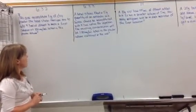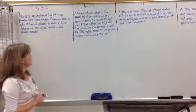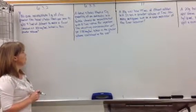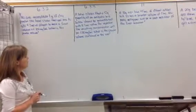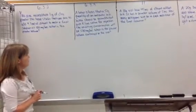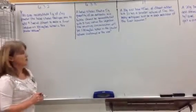A label states that a 5 gram quantity of an antibiotic in a bottle should be reconstituted with 8.7 mls of saline borne injection, the resulting concentration will be 500 mg per ml. What is the powder volume contained in the bottle?